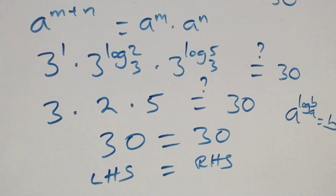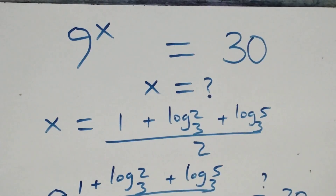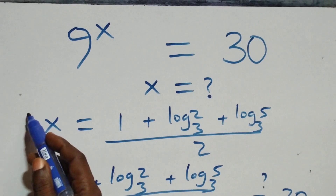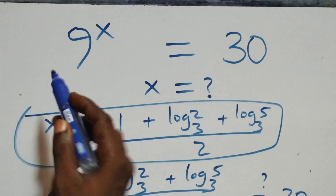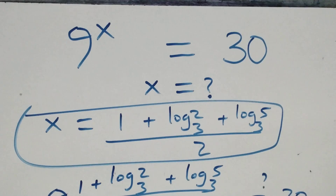Therefore, we conclude that x equals to (1 plus log 2 base 3 plus log 5 base 3) all over 2, which satisfies the given problem. Thank you for watching. Don't forget to subscribe for more videos, turn the notification bell on, share this video, give it a thumbs up, and put your comments. See you next time, bye for now.